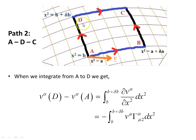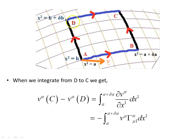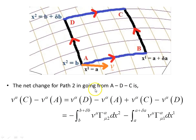Path two goes from A to D to C. When we integrate from A to D we get one expression. Then integrating from D to C along the x2 direction gives another expression. The net change for path two, from A to D to C, is v(C) minus v(A), equal to the change going from A to D plus the change going from D to C.